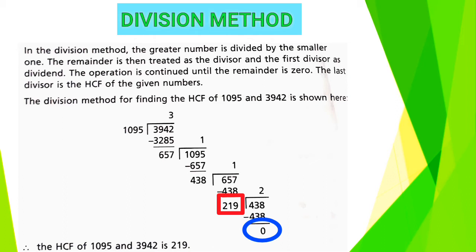The division method for finding the HCF of 1095 and 3942 is shown here. 1095 into 3 is 3285, and 3285 is subtracted from 3942, so remainder is 657. Now 657 is divisor and the previous divisor such as 1095 is dividend.